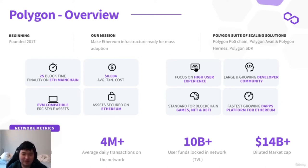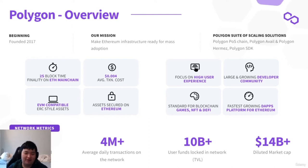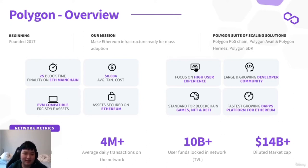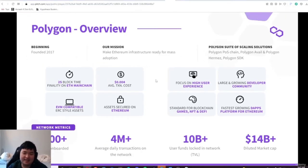Here are just a few numbers on how great Polygon is. You have super low block time — Ethereum mainchain has around 10 to 15 seconds of block time; we have two seconds, that's about five times faster. And the average transaction cost on Polygon is less than a cent.